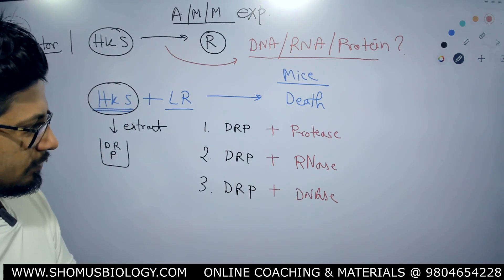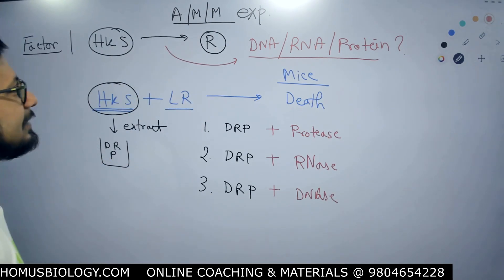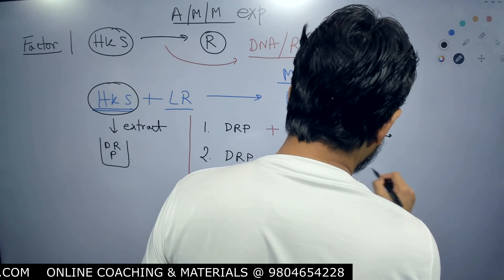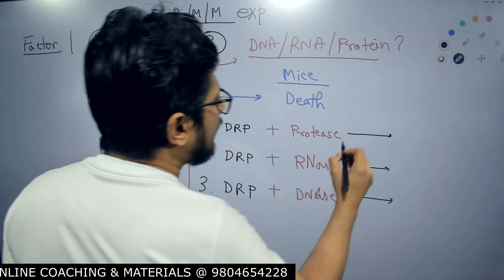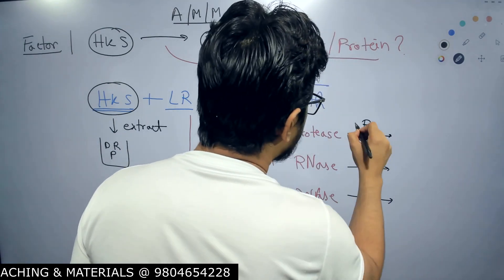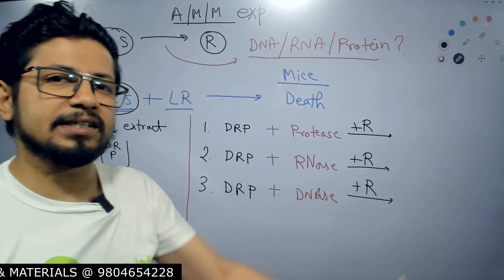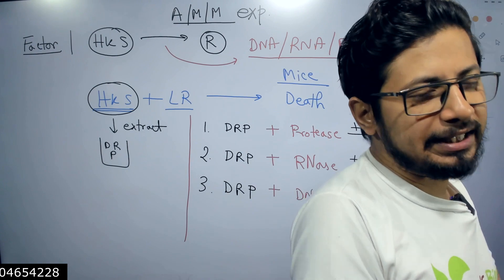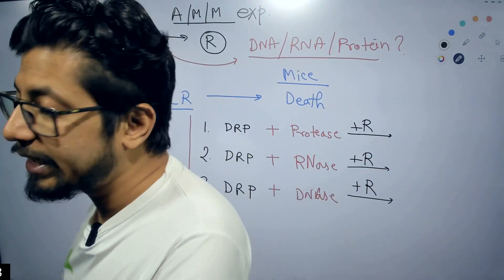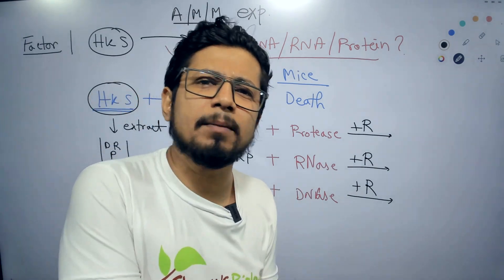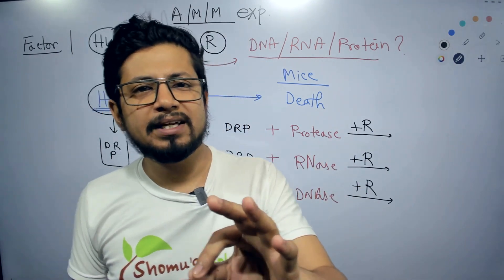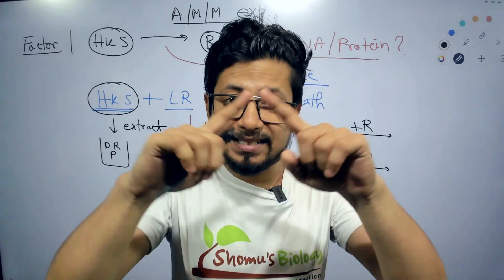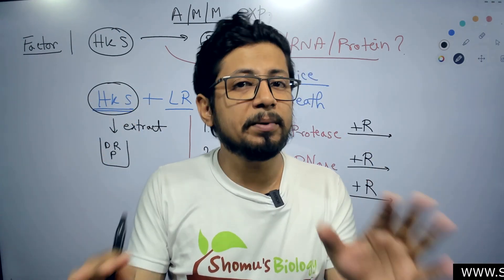This was the experimental setup done by Avery, MacLeod and McCarty. They wanted to see if they injected this extract along with the living R strain, what would be the result. A cell extract alone is not capable of showing virulence — even if it contains genetic material like protein, DNA, or RNA, it cannot kill mice by itself. That was pre-established by Griffith. Virulence comes only from a living cell when DNA, RNA, and all components are together.